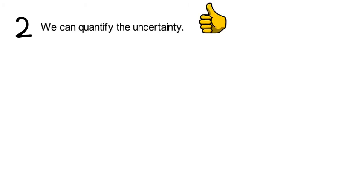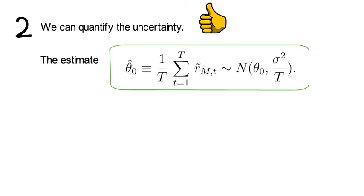Now, second, for the current return setup, we can quantify that uncertainty. That is because the estimate of theta zero, simply the average of realized excess returns, follows a Gaussian distribution, which is centered around the true but unobserved theta zero with a variance of sigma square over t.